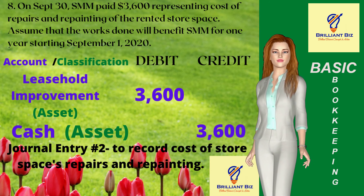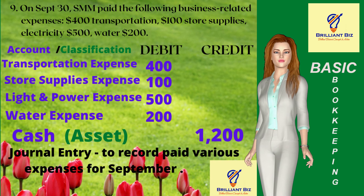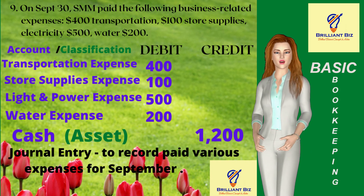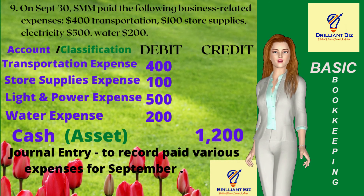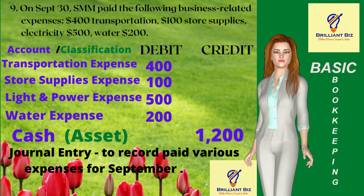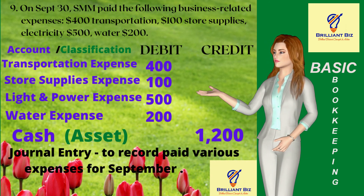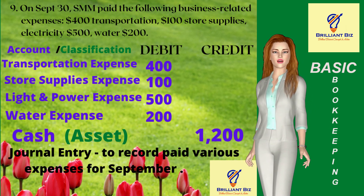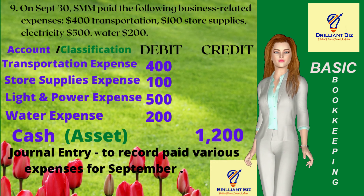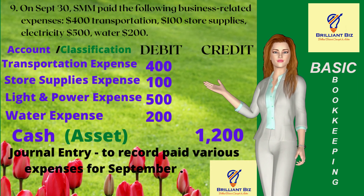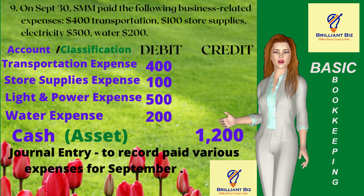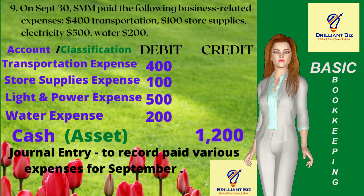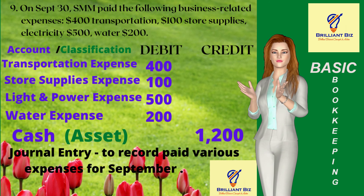Transaction 9: On September 30, SMM paid the following business-related expenses: $400 for transportation, $100 for store supplies, $500 for electricity, and $200 for water. The entries are debit transportation expense $400, store supplies expense $100, light expense $500, and water expense $200; and credit cash of $1,200 to decrease the account for the total expenses paid.